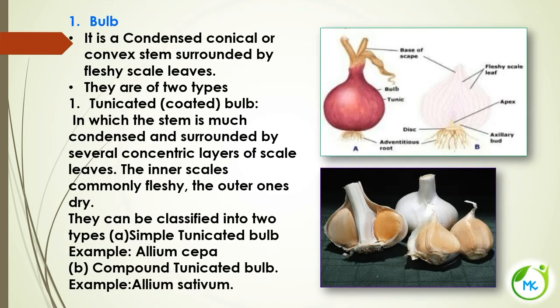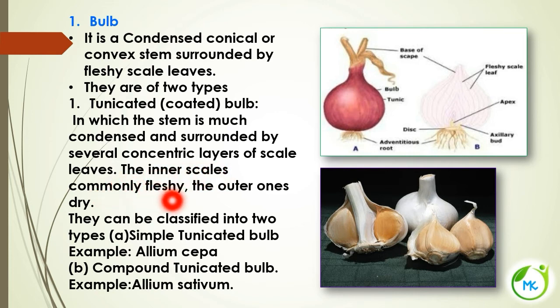In underground stem modification, first we see bulb. A bulb is a condensed, conical or convex stem surrounded by fleshy scale leaves. There are two types: tunicated or coated bulb, where the stem is condensed and surrounded by several concentric layers of scale leaves — the inner scales are fleshy and the outer ones are dry. Bulbs can be simple tunicated — Allium cepa (onion) — or compound tunicated — Allium sativum (garlic).